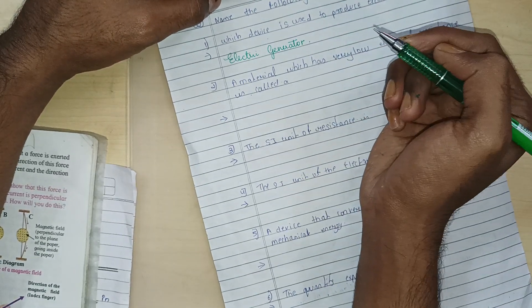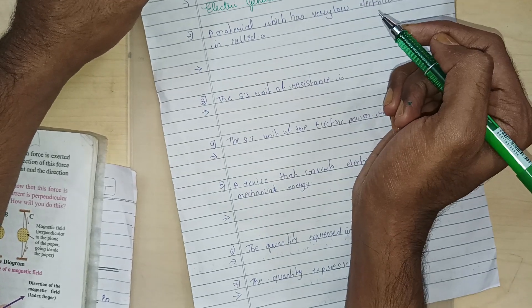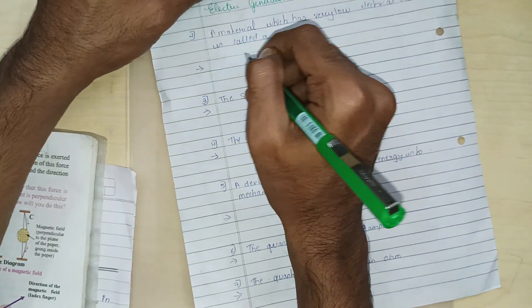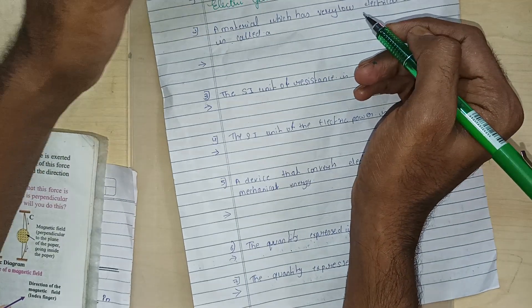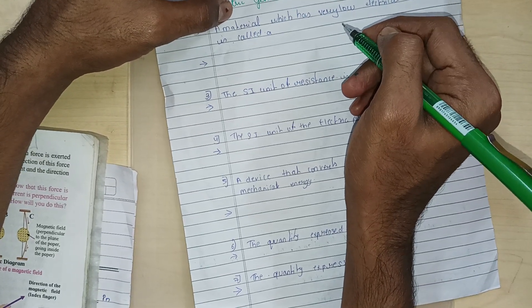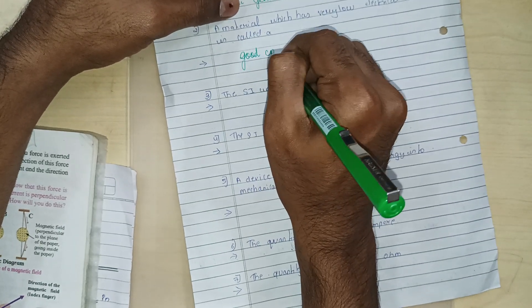A material which has very low electrical resistance is called a dash. A material which has very low electrical resistance, what will we call it? Good conductor of electricity. What will you say? Good conductor of electricity.